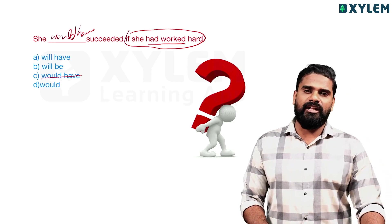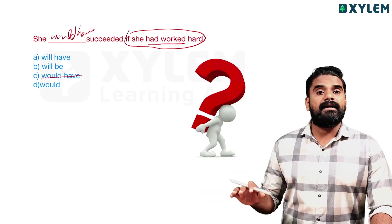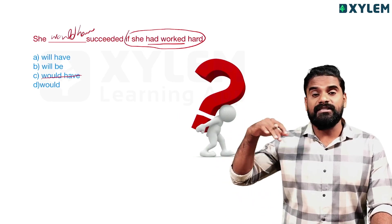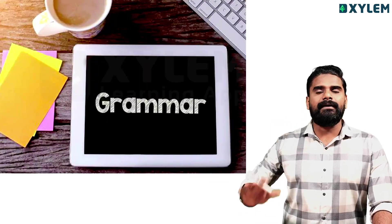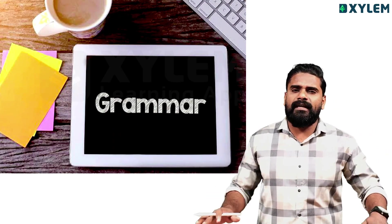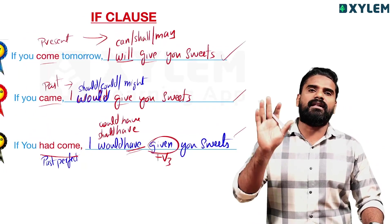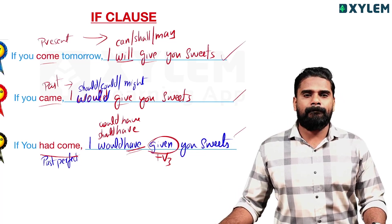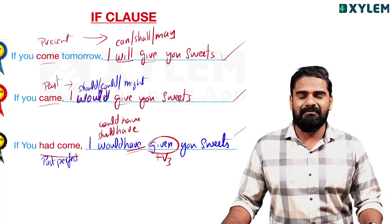This is about impossible conditions. If you had trained me — this is the third condition, an impossible past condition. We've covered three things today. We can look at previous year's question papers with if clause. Okay, thank you.